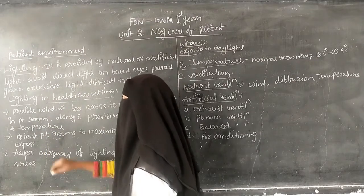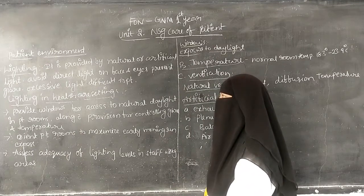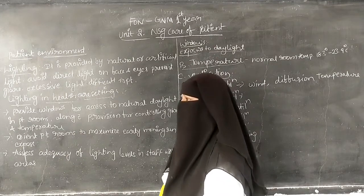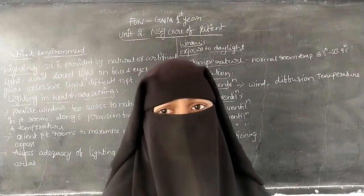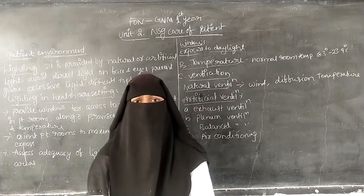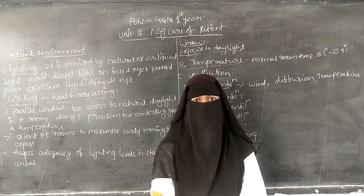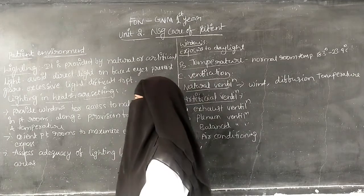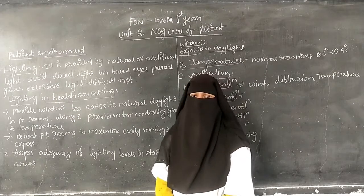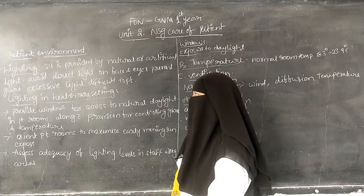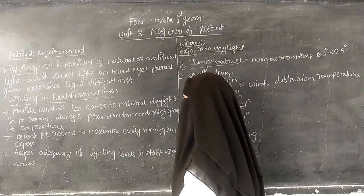The next aspect is lighting. Lighting should be provided by natural or artificial light. Artificial light includes lights or bulbs, while natural light refers to daylight. Lighting should be provided by natural or artificial means.